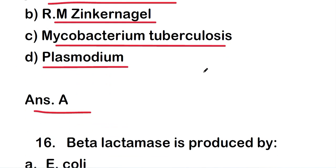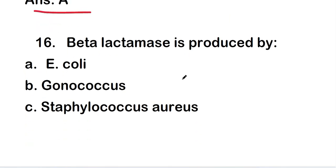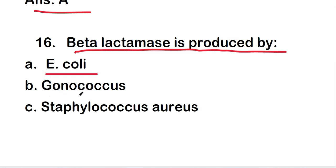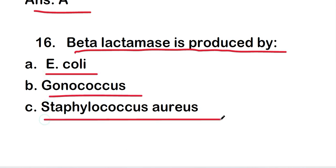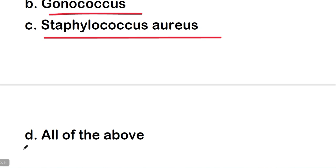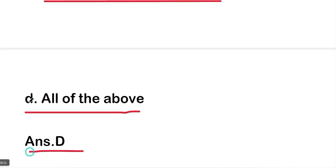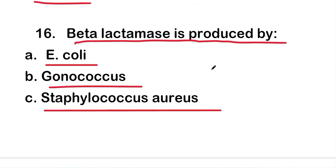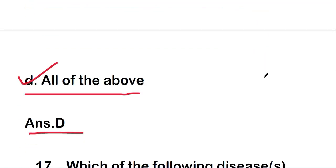Next question: beta-lactamase is produced by E. coli, gonococcus, Staphylococcus aureus, or all of the above. The right answer is option D — all of the above. Beta-lactamase is produced by E. coli, gonococcus, and Staphylococcus aureus.